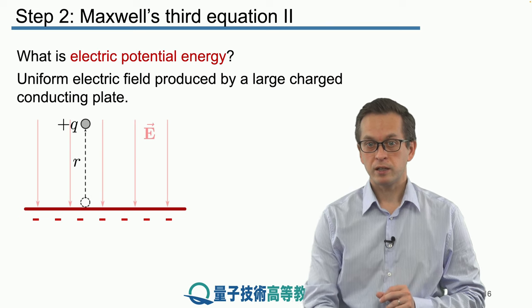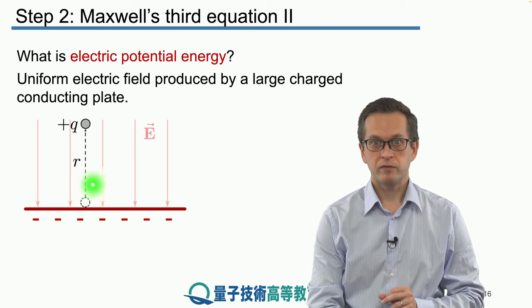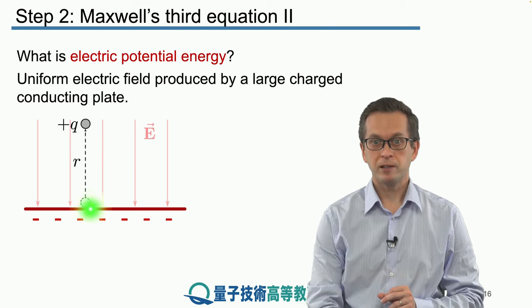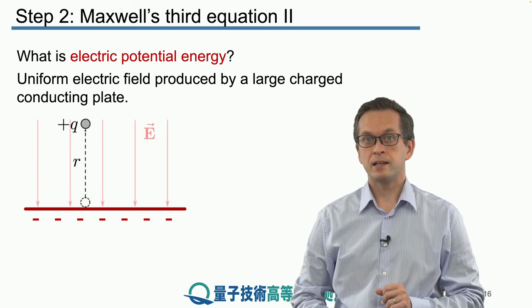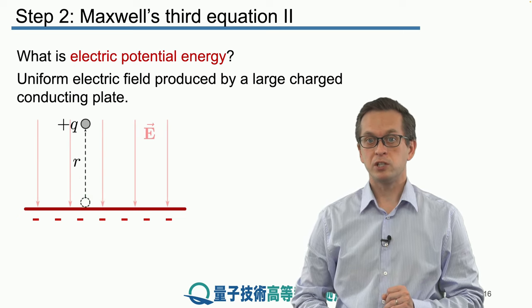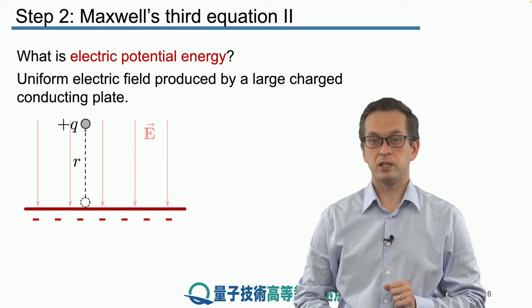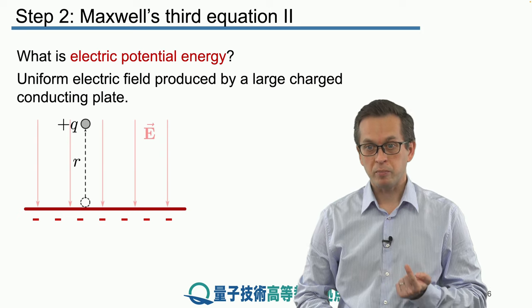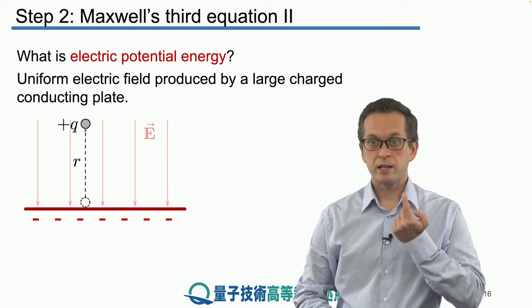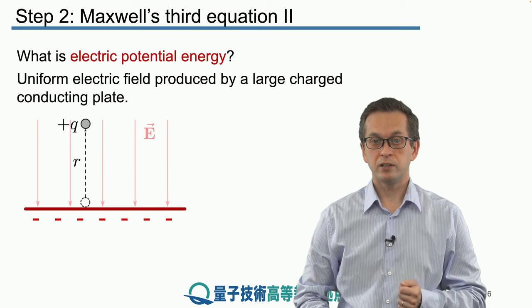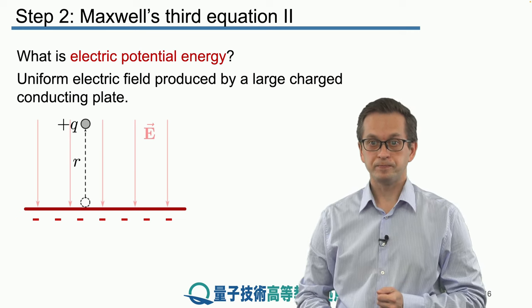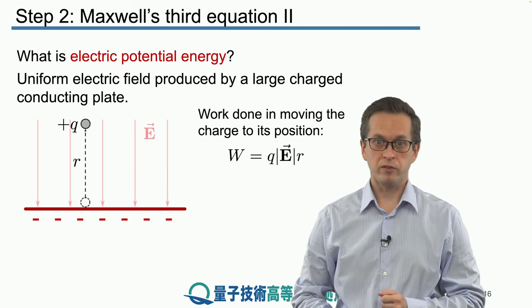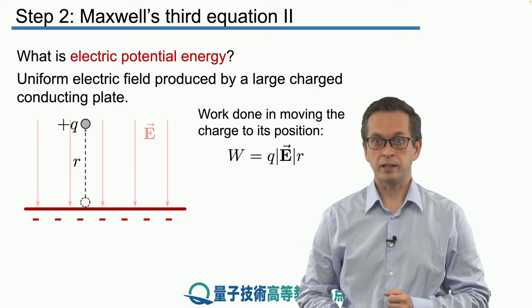And our test charge is positive given by this plus q. And what we do, we start at the surface of the metal, and we say that that's our position where the potential energy is zero. The electric potential energy is zero. And then we have to apply some force to raise the charge to work against the field to height r, or to distance r away from the charged conducting plate.